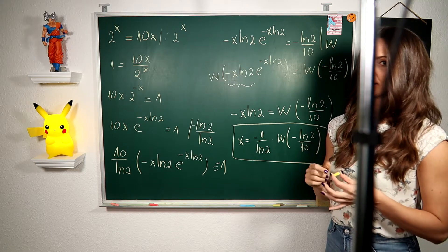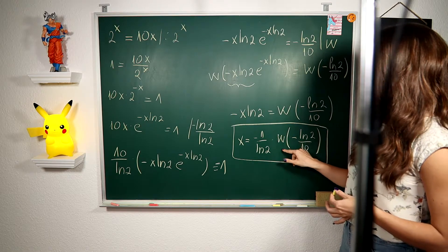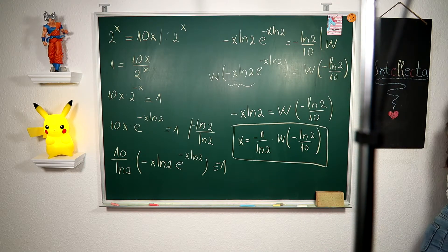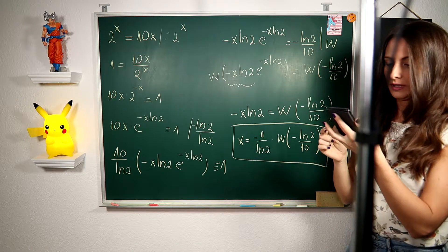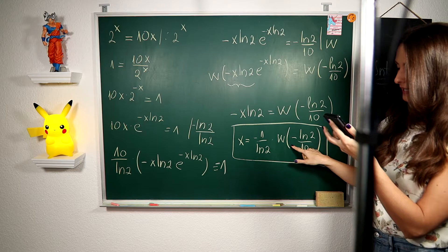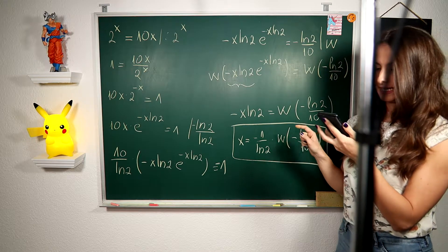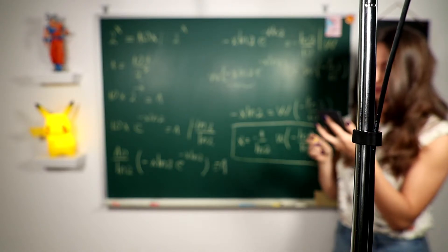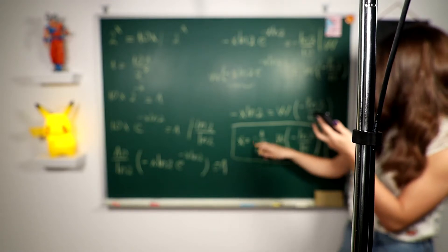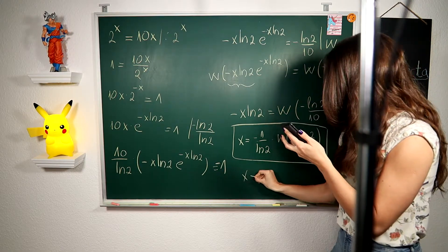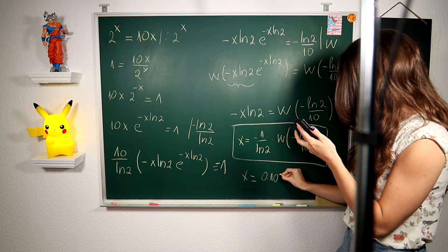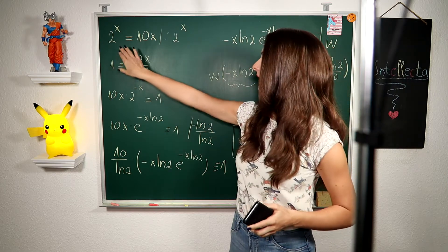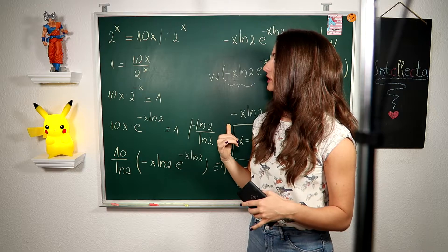As I explained in my video about the LambertW function, you can compute this using Wolfram Alpha. You will get that W(−ln 2 / 10) is −0.074. Multiplying by −1 / ln 2, we get that our x is approximately 0.107. And this is our solution using the LambertW function.